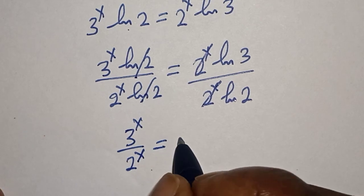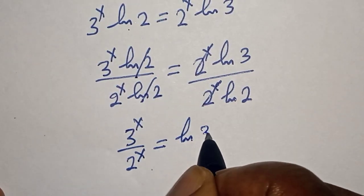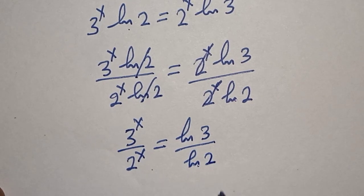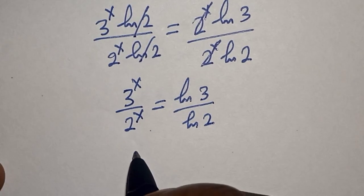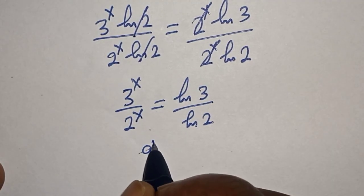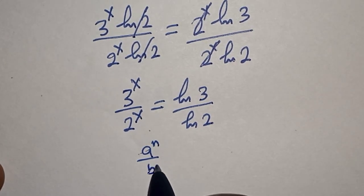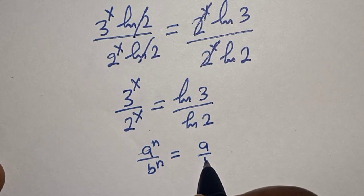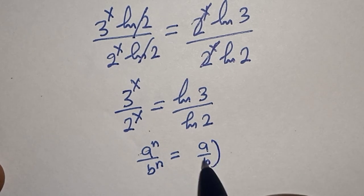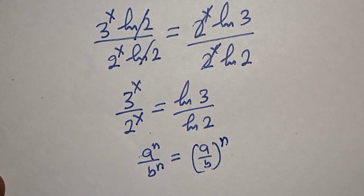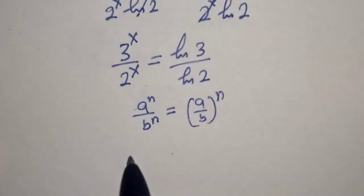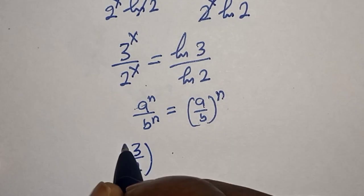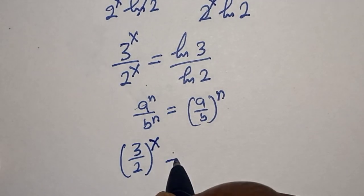Now take note of this rule: a raised to power n over b raised to power n is equal to a over b to the power of n. Then this becomes 3 over 2 to the power of s is equal to natural log 3 over natural log 2.